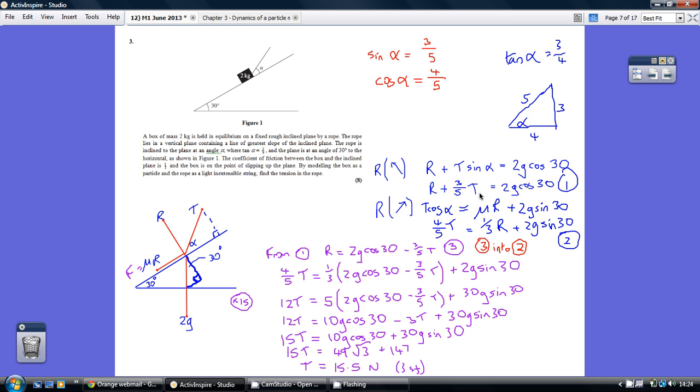So there's our two equations, two unknowns, so we've just basically got to solve to find T, so I've taken 1 and rearranged it to make R the subject, calling that 3, I've then substituted 3 into 2, worked my way through the algebra, and got T being 15.5.